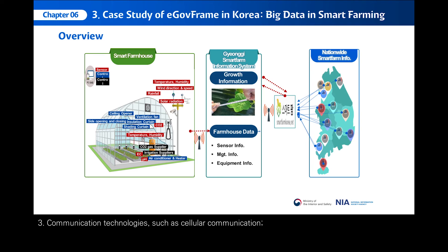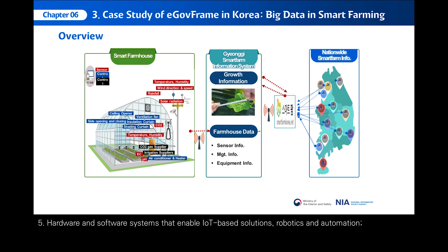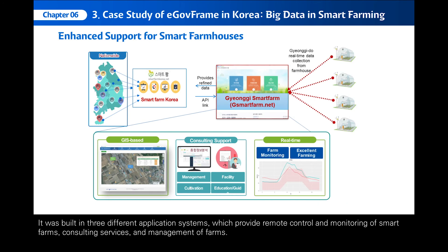Communication technologies such as cellular communication; positioning technologies including GPS; hardware and software systems that enable IoT-based solutions, robotics, and automation; and data analytics that underlies the decision-making and prediction processes. It was built in three different application systems, which provide remote control and monitoring of smart farms, consulting services, and management of farms.